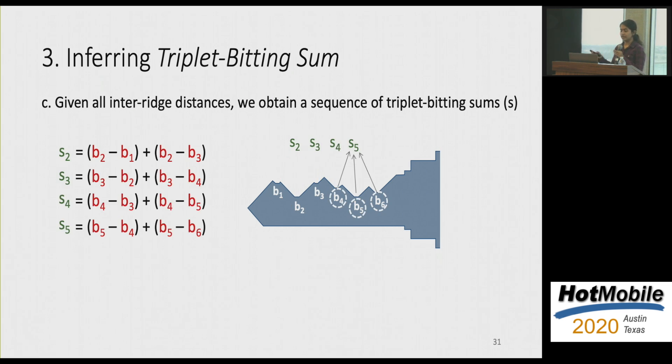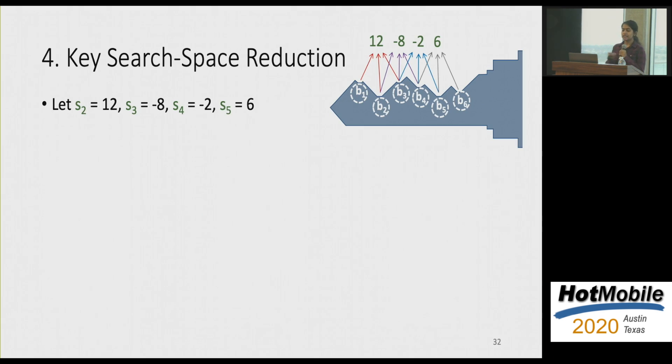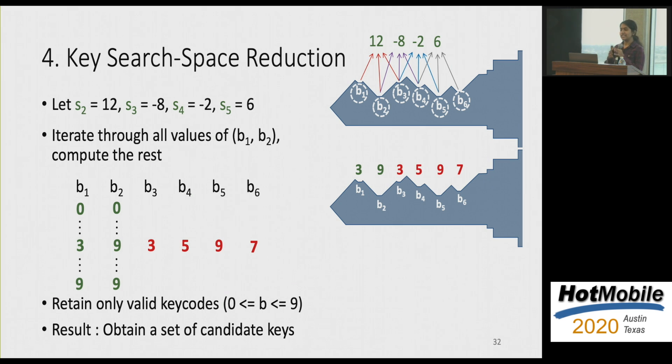So now that we compute the triplet bitting sum for one particular triplet, we can similarly compute this value for all possible triplets. And what this essentially gives you is a set of four equations where you know the values of the triplet bitting sums and you have six unknowns, which are the bitting positions itself. So given this particular triplet bitting sequence, we now show you how you can obtain a set of candidate keys. So what we really want to know is the six different bitting values. So because we have more unknowns than equations, we try to fix the value of the first two bitting positions. So let's say we fix it to B3, 9, for example. You can already deterministically compute B3 because s2 is related to B1, B2, and B3, and you already know the values for the remaining variables. So on finding B3, you can similarly find the values of the rest of the bitting positions as well. So of all the values we get, we only retain the valid codes such that the values lie between 0 and 9 for all bitting positions. So ultimately what SpiKey returns to you is a set of candidate keys for each audio recording of which one of them corresponds to the right victim key.